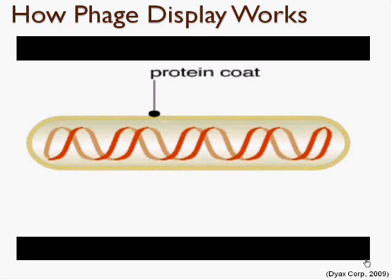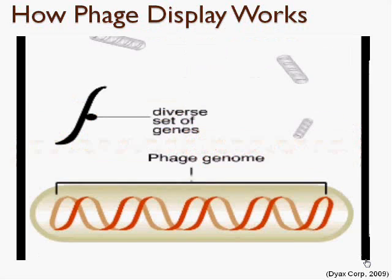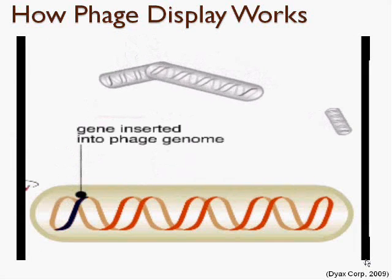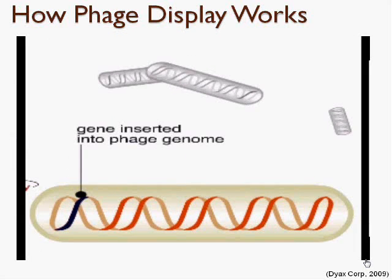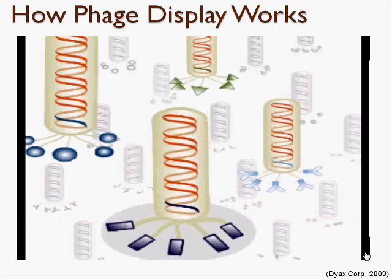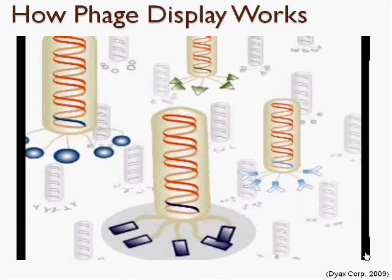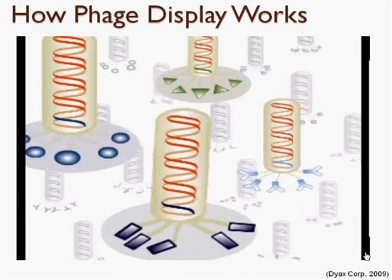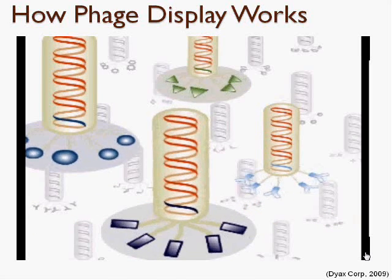Therefore, for this treatment method, genes from a variety of zinc finger proteins will be inserted into gene 3 of the phage. This will create a library of phages each expressing a specific zinc finger protein at their end.